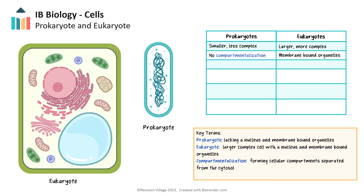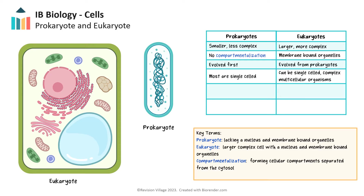Eukaryotic cells are larger and much more complex. There are organelles, such as the mitochondria, that are enclosed by a membrane, so they are compartmentalized and separate from the cytosol of the cell. Prokaryotes evolved first and were a common ancestor of eukaryotes. Although some prokaryotes form multicellular colonies, prokaryotes such as bacteria are single-celled organisms. Eukaryotes can be unicellular or multicellular; however, complex organisms with specialized tissues and organs require the compartmentalization found in eukaryotic cells.